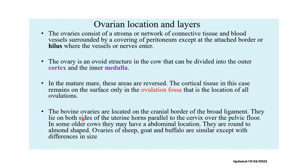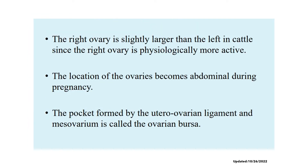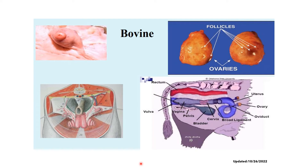The bovine ovaries are located in the cranial border of the broad ligament and lie on both sides of the uterine horn, parallel to the cervix over the pelvic floor. The right ovary is slightly larger than the left, since the right is physiologically more active. The location of the ovaries becomes abdominal during pregnancy. We also have the structure known as the ovarian bursa, which is the pocket formed by the utero-ovarian ligament and the mesovarium. The mesovarium is the broad ligament that supports the ovary.